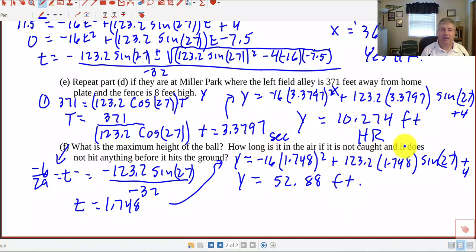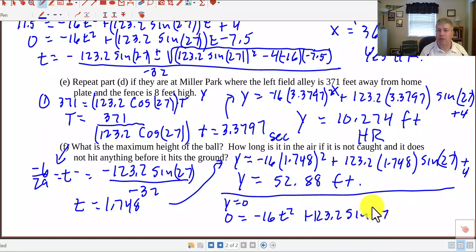And then how long is the ball in the air if it's not caught and it does not hit anything before it hits the ground so that question is asking when is our height zero so we set our Y equal to zero for that guy so we get zero equals negative 16 T squared plus 123.2 sine of 27 T plus 4 and this we'd have to put in the quadratic formula and I'll leave that for you and ask you to bring that to class so find out what our T is when the height is zero by using the quadratic formula and with that practice on parametric equations we'll get some more of that when I see you in class.